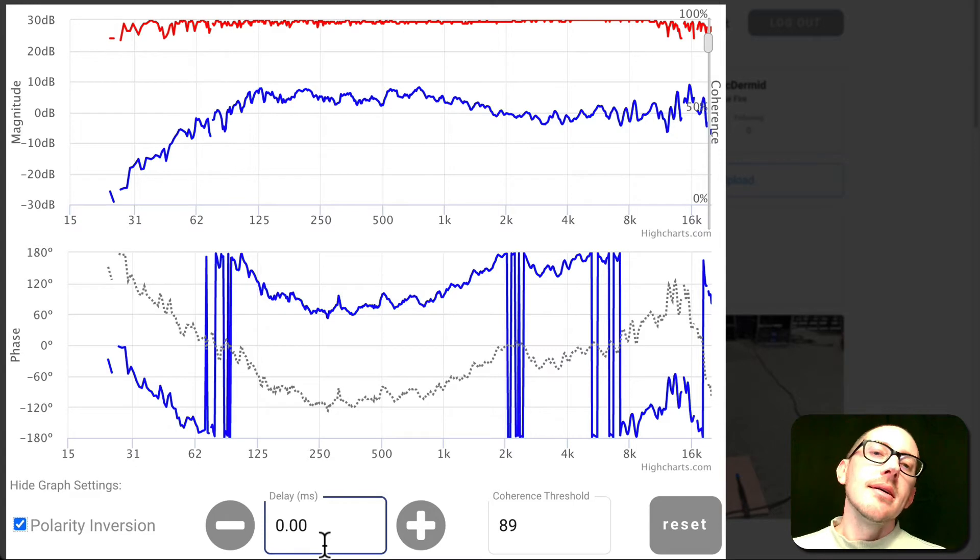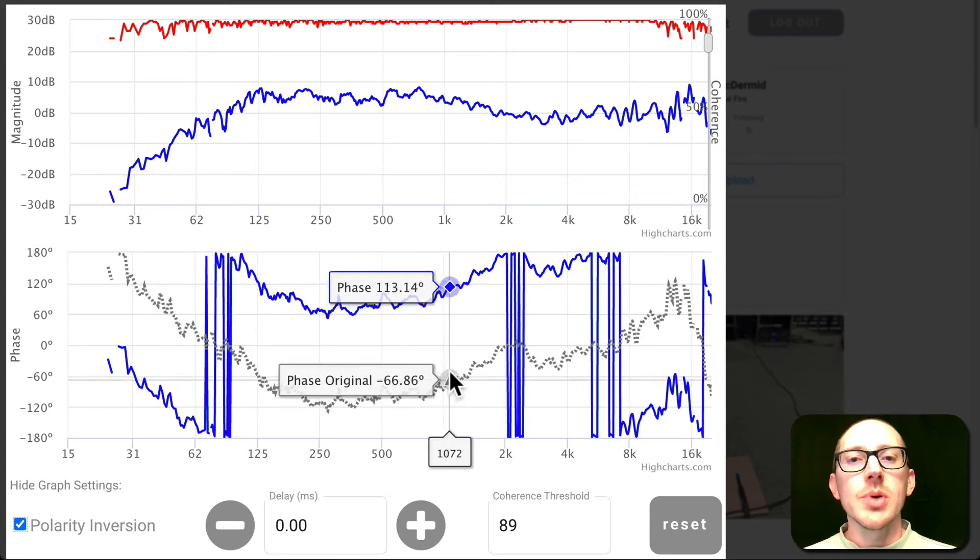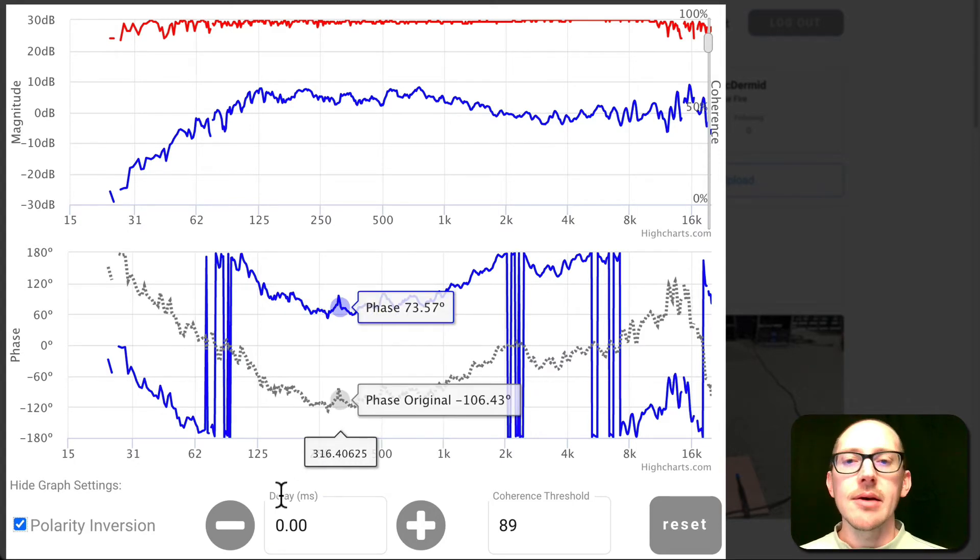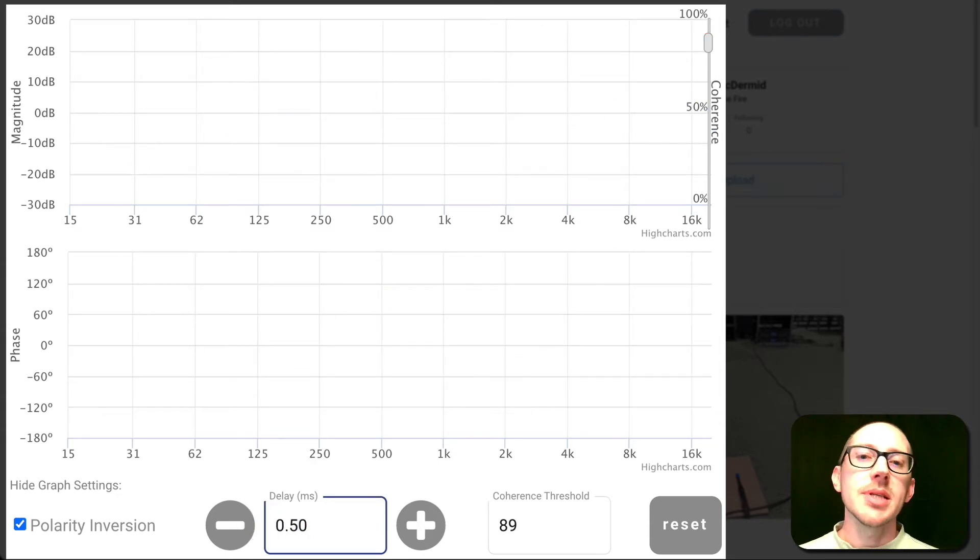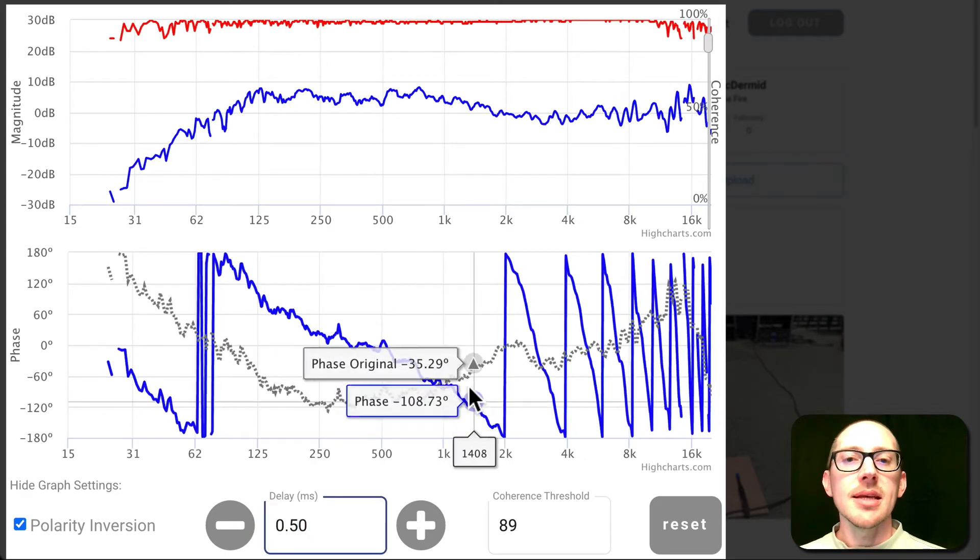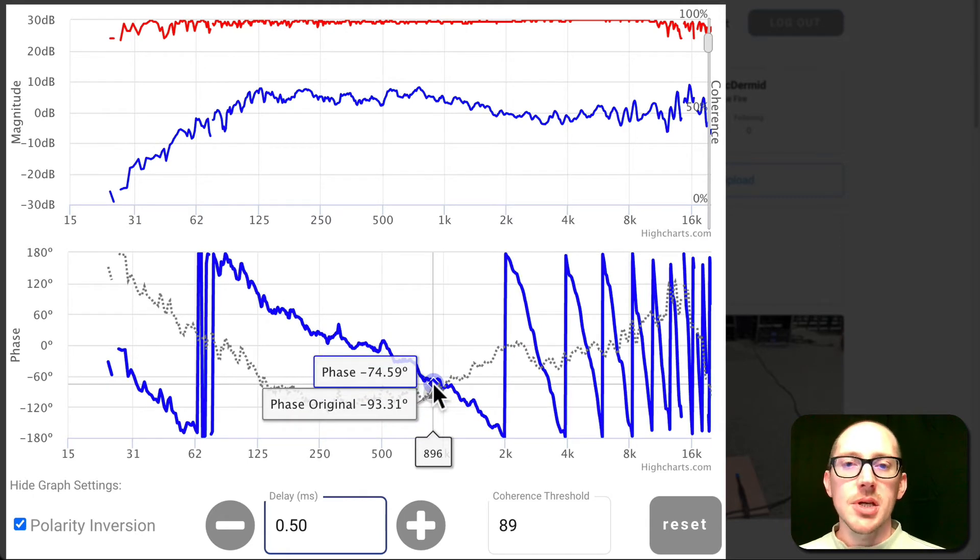So let's say you wanted to add half a millisecond of delay, because you want to see what half a cycle looks like at 1k. You would put 0.5 milliseconds, and it would take a second for that to update. Then you could see that adjustment here.